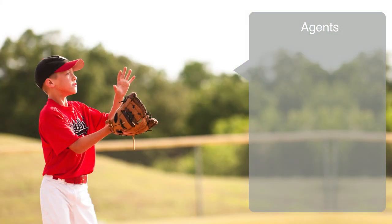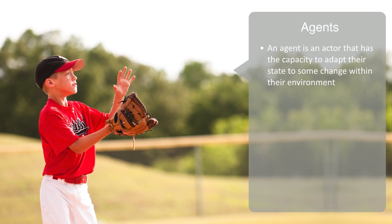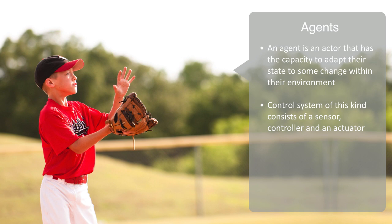An agent is an actor that has the capacity to adapt their state, meaning that given some change within their environment, they can, in response, adjust their own state. Say our agent is a player within a sports game — if we throw a ball to the person, he or she can catch that ball. They are able to do this because they have what is called a regulatory or control system. A control system of this kind consists of a sensor, controller, and an actuator. The person is using their optical sense to input information to their brain — the controller — which is then sending out a response to their muscles, the actuator. Through this process, they can adjust to generate the appropriate response to this change in their environment.